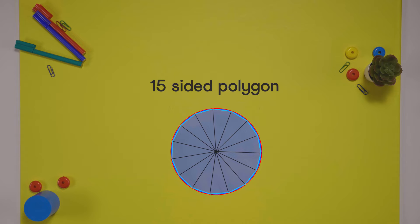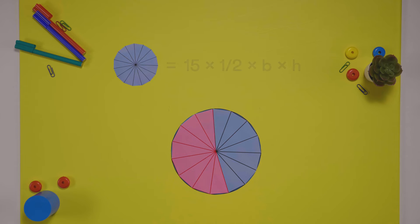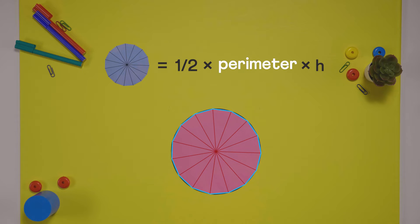Similarly, a 15-sided polygon is further close to the circle and has an area of 15 times the area of a triangle. Again, half times perimeter times height.